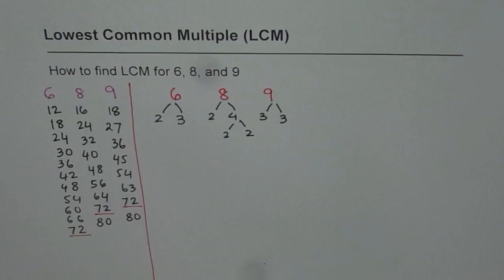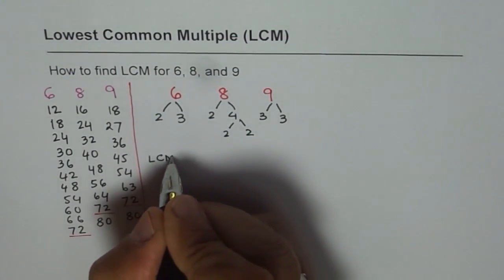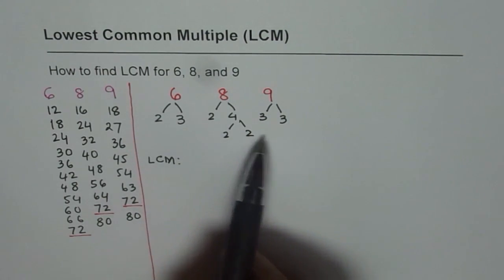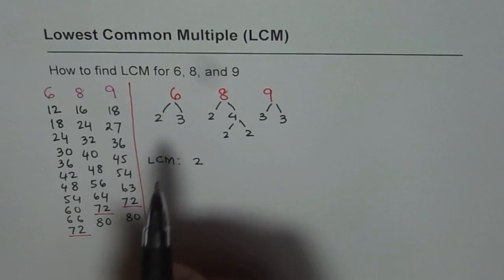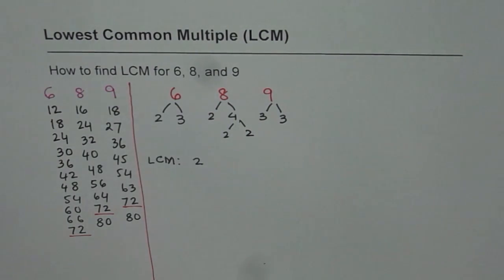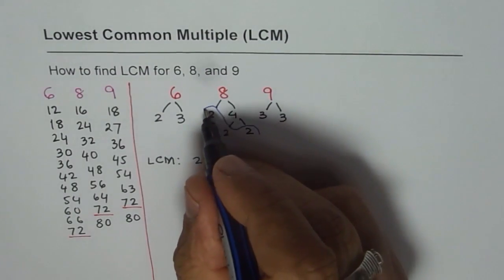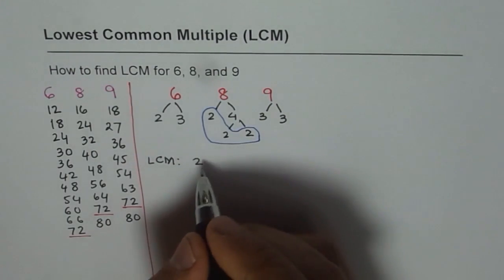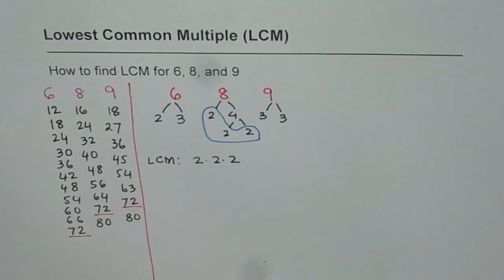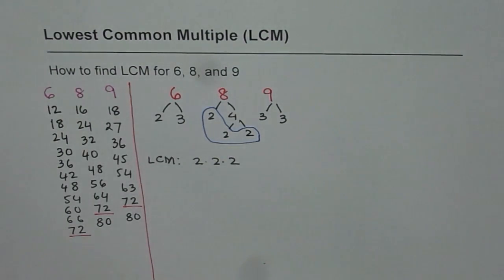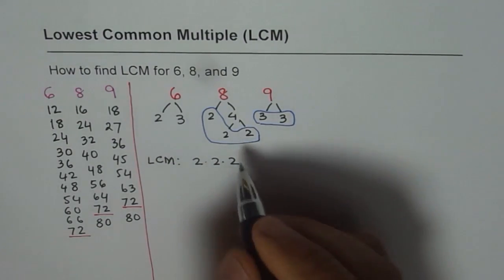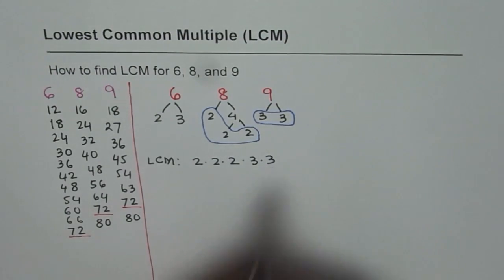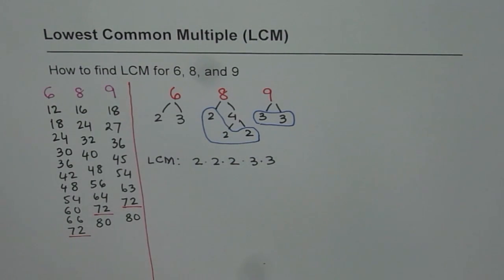Now to find the least common multiple, what do we do? We see that there are 2 types of prime factors: 2's and 3's. We check where the maximum number of 2's are — in 8, there are 3 of them. So we write down three 2's and multiply them together. The second factor is 3's: the maximum number of 3's are in 9, which has two 3's. So we write 2 times 3, giving us the set of factors for our least common multiple.